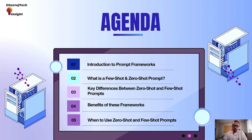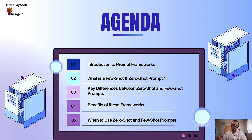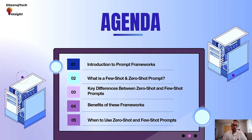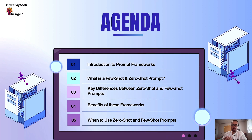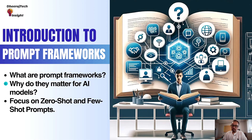The agenda for today's tutorial is as follows. First, we would go ahead with the introduction of prompt frameworks, where we would understand what prompt frameworks are and how they impact and help. Then we will talk about two different prompt frameworks: the first one would be few-shot and the second one would be zero-shot. Then we will talk about the key differences between them, the benefits of these frameworks, and finally the use cases for which they can be utilized.